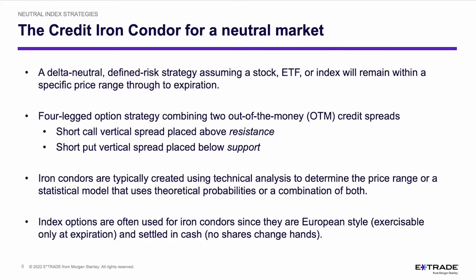Index options are often used for iron condors since they're European style, meaning they're exercisable only at expiration. Don't confuse that with not being tradable — these are highly liquid; you can trade in or out provided the market is open. Another thing is that they're settled in cash. This means that if there's going to be an exercise or assignment, there are no shares that change hands — everything is settled up in cash.